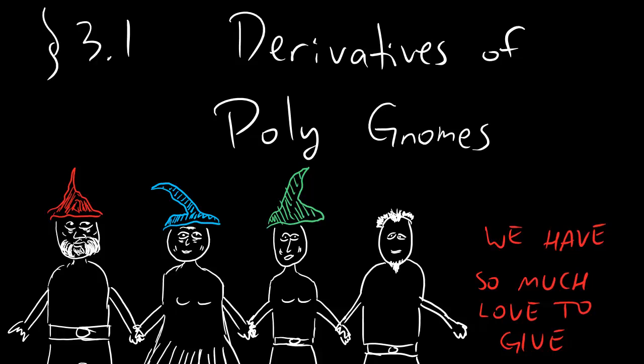And so we might pick time to be in hours and then we're going to find a function for poly gnomes and then take the derivative and see what happens. Oh wait a minute, I'm being informed that that's not it at all and actually the thing that we're taking the derivative of is poly gnomes.